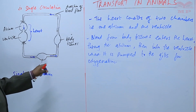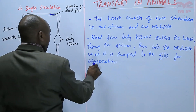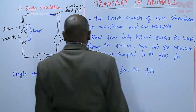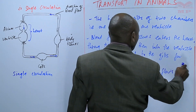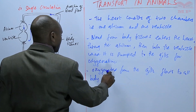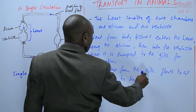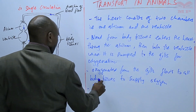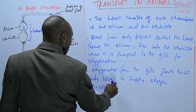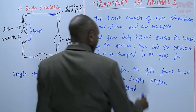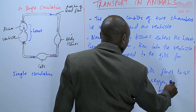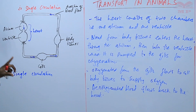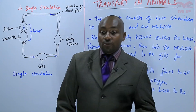As the blood leaves the gills, it is already oxygenated — rich in oxygen. The oxygenated blood from the gills flows to all body tissues to supply oxygen. Then it becomes deoxygenated and flows back to the heart. That is a single circulation — where the blood flows through the heart only once.